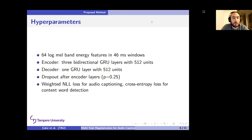If we talk about hyperparameters that we use, we used 64 log-melband energy features calculated in 46 millisecond windows. Our encoder consists of three bidirectional gated recurrent unit layers with 512 units. In our decoder we employ one GRU layer with 512 units. And we employ dropout after every encoder layer with probability 0.25 for further regularization. These parameters were selected based on grid search.